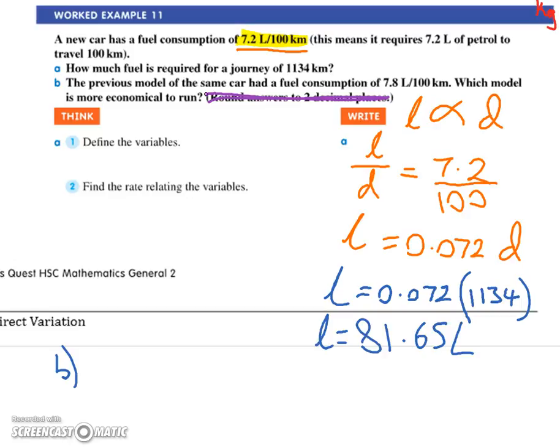And they tripped them up because it's got that 'round answers to two decimal places'. So they did what you said and did it again with the 7.8. But actually, you didn't need to because the question just says which one's got a better fuel consumption.